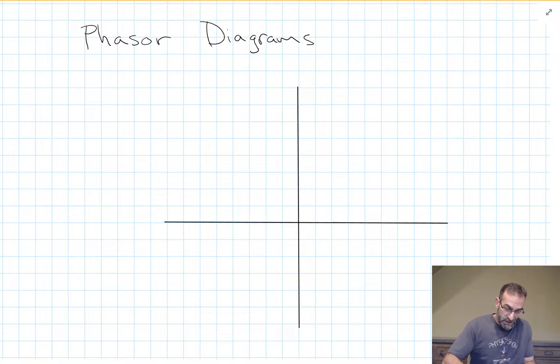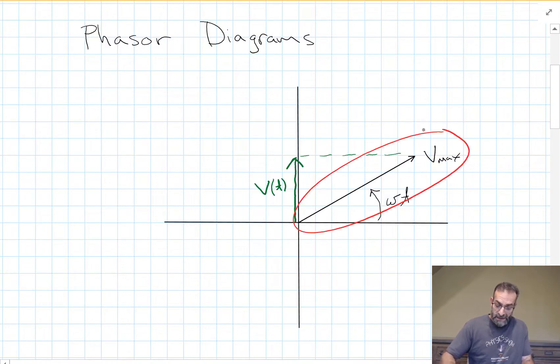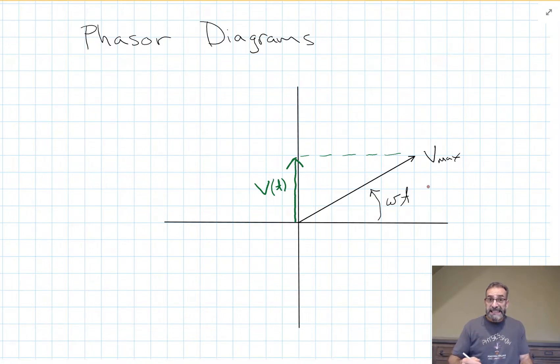So if I plot a vector here, the length of this vector is equal to V maximum. And the projection of this vector onto the vertical axis gives me the voltage across my device at this instant in time. So this vector I drew, V maximum, rotates around and around. And at any instant in time, if I look at a projection onto the vertical axis, I know the instantaneous voltage on my device.